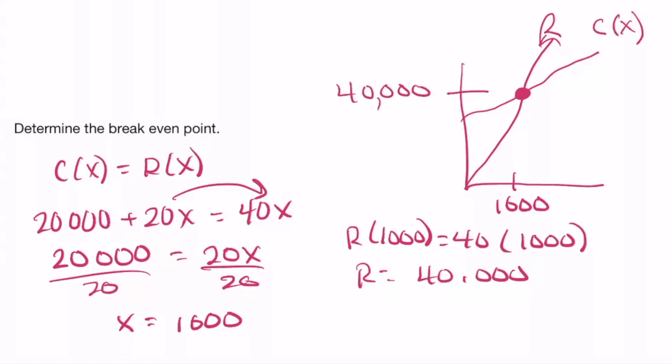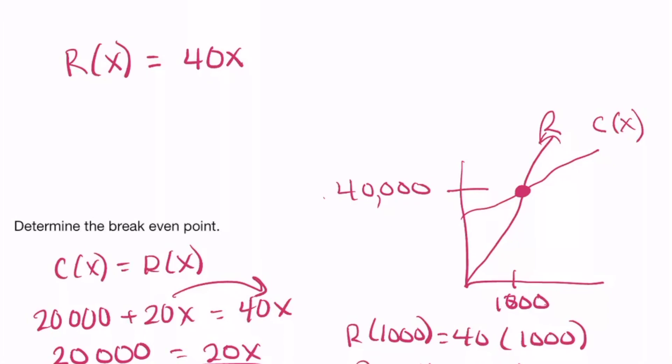So what that means is they need to sell 1,000 surfboards in order to break even. So they'll make $40,000 off of their 1,000 surfboards. They'll make all their startup money back, and everything past that will be profit.